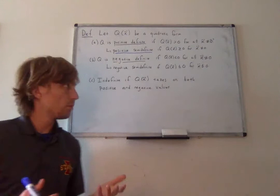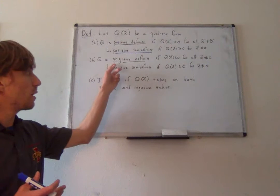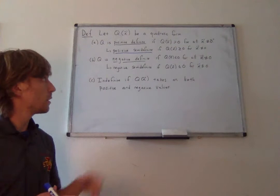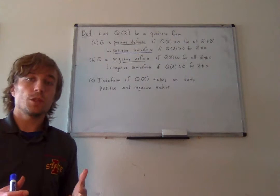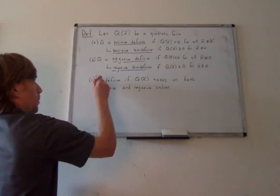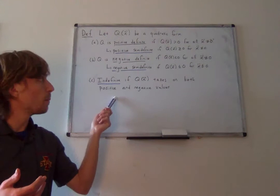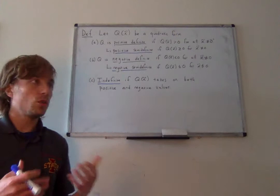We also have corresponding definitions for Q of X being negative. If Q is negative definite, then Q is strictly less than zero for all non-zero X. If Q is negative semi-definite, then it is less than or equal to zero for all non-zero X. And finally, we say that a quadratic form Q is indefinite if it takes on both positive and negative values. Most quadratic forms you'll probably see will be indefinite.